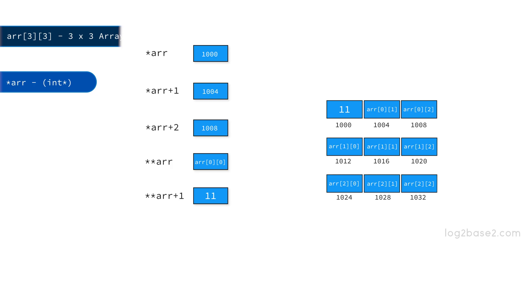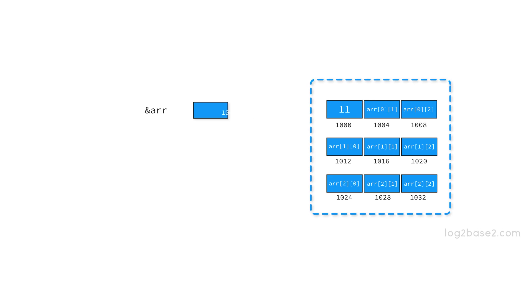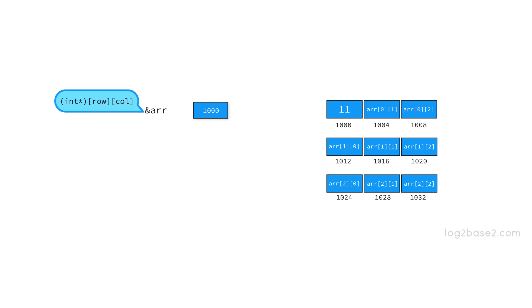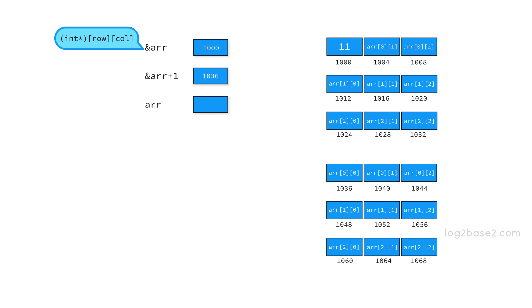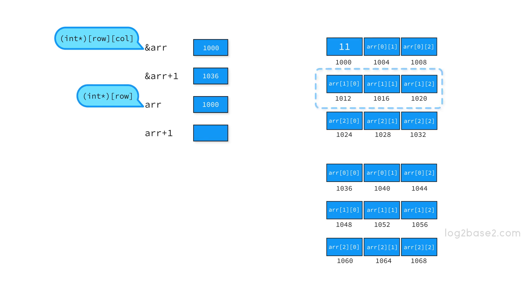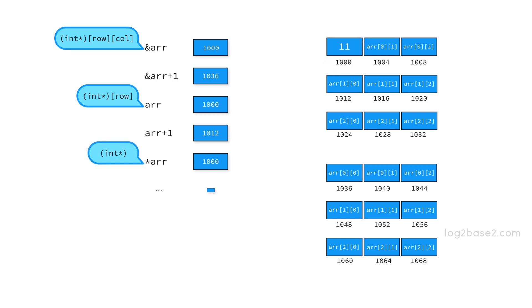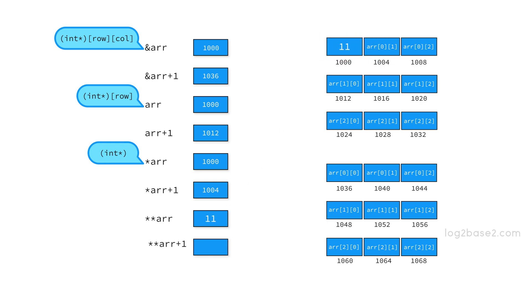Let us summarize the concept. &ARR is a 2D array pointer of type int(*)[row][column], so &ARR + 1 will point to the next two-dimensional block. ARR is a 1D pointer of type int(*)[row], so ARR + 1 will point to the next one-dimensional array in the 2D array. *ARR is a single element pointer of type int*, so *ARR + 1 will point to the next element in the array. And finally, **ARR is the value of the first element, so **ARR + 1 will increment the element value by 1.